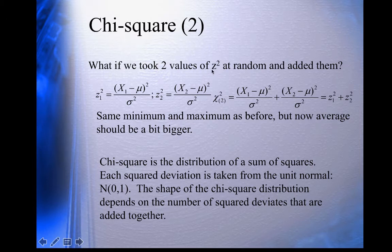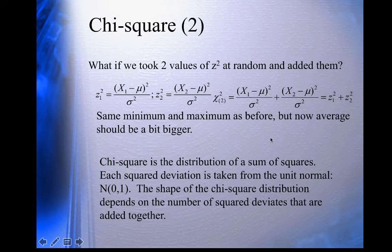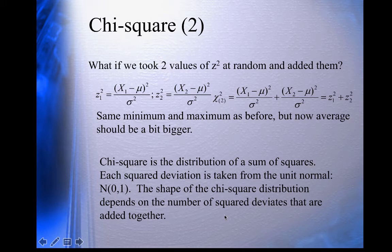What if we took two values from the unit normal, squared each of them, and added them together? We get the first one squared plus the second one squared. The minimum value is zero, most values coming out are near zero, and the maximum goes to infinity since the normal is unbounded. When we add two of them together, we get a slightly bigger mean. The chi-square distribution is a sum of these squared deviates, each taken from the unit normal. The shape of chi-square depends on the number of squared deviates added together — its degrees of freedom.